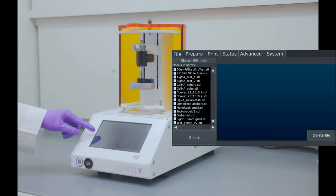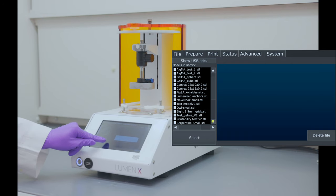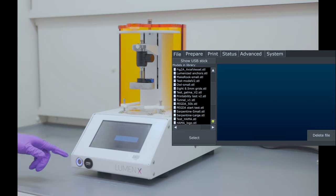We can scroll through the library to find the object we want to print. Tap on the scroll bars to navigate as needed. We can import STL files to the library using a USB flash drive.